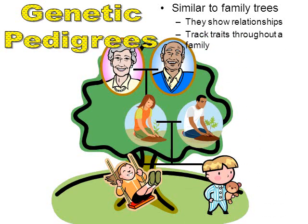More importantly, we look at pedigrees because it allows us to track a gene, or track a trait throughout a family. If a family has a history of a trait such as sickle cell disease or cystic fibrosis, we can track that gene from person to person throughout the family. This can be really helpful when young men and women are deciding whether or not to raise a family — they can figure out the odds that their child might have a disorder.